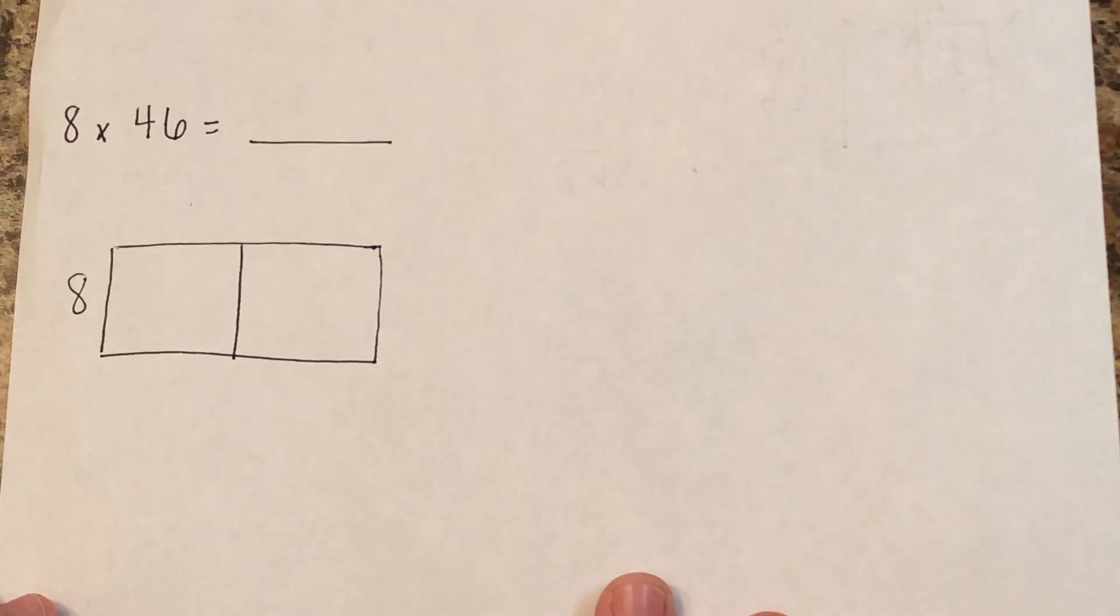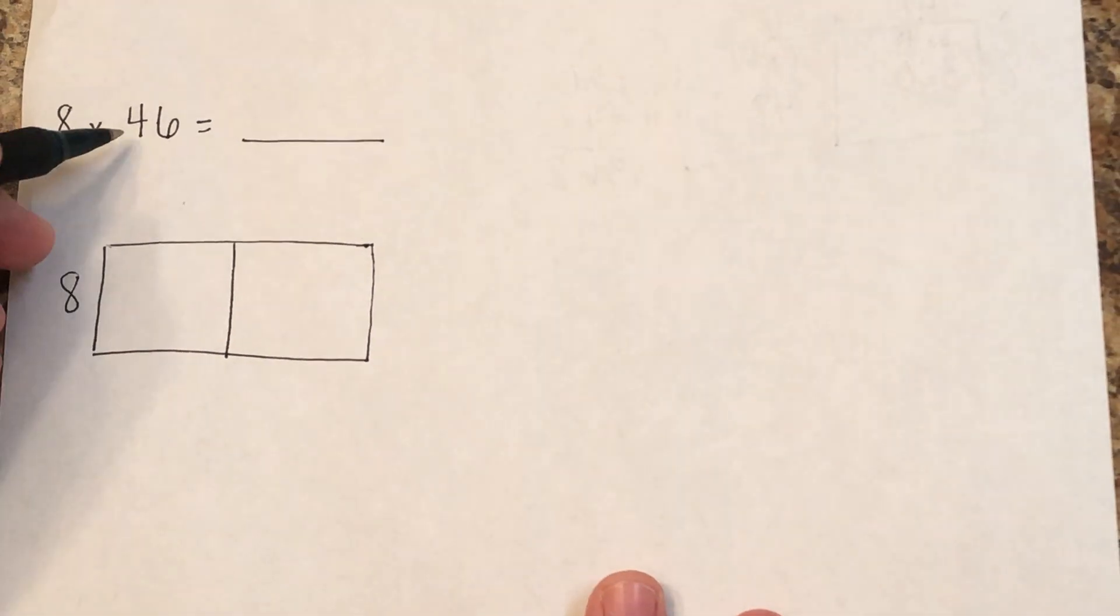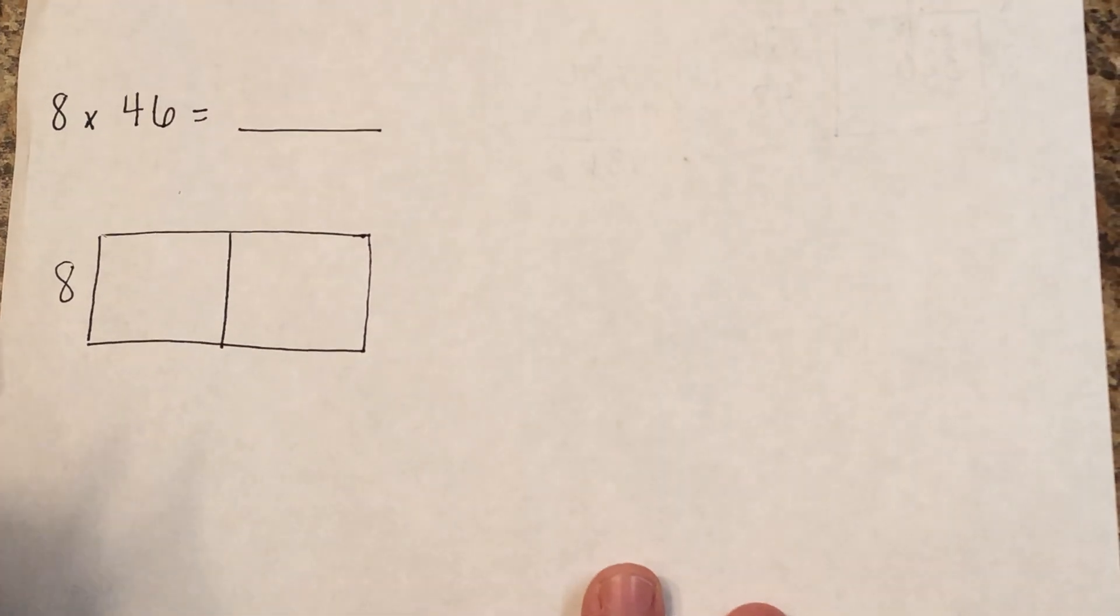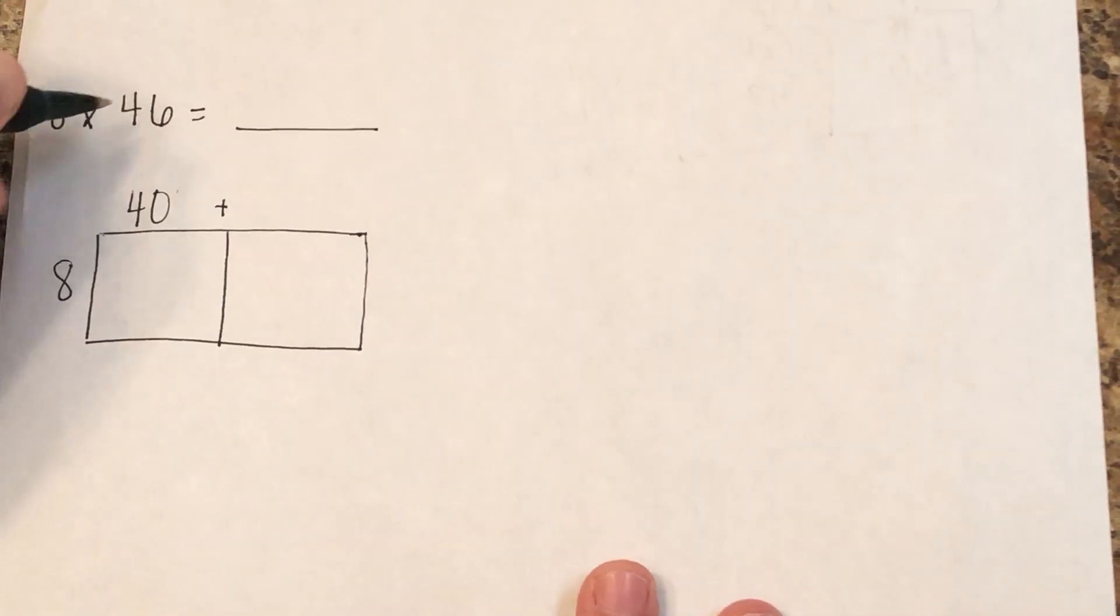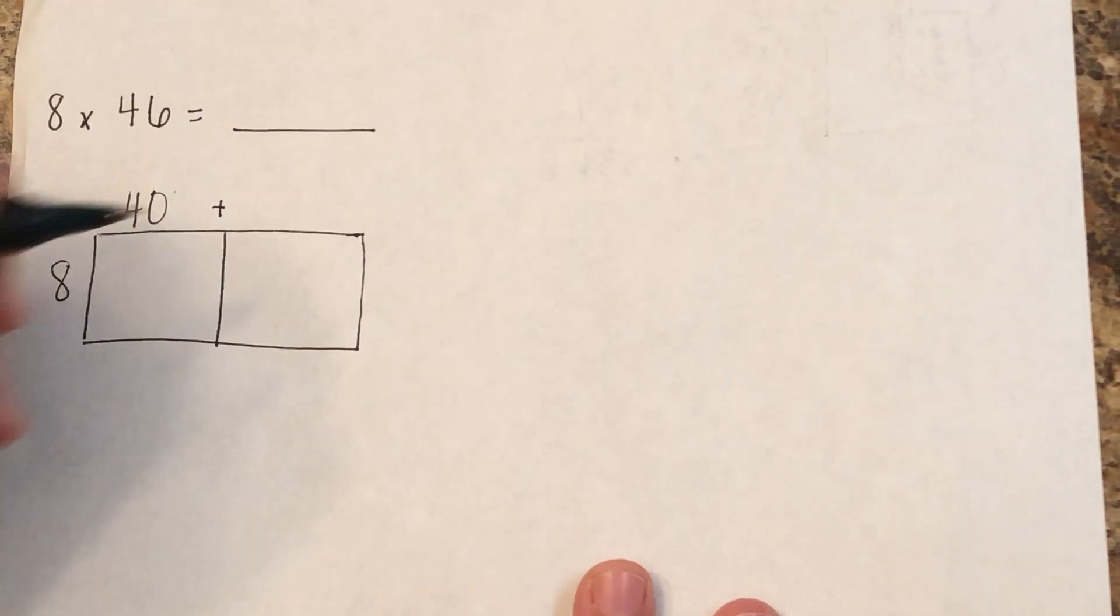So your 1-digit number is going to go right here, which is just 8. You're going to use the expanded form of 46. So that 4 is in the 10s place, so its value is 40. Plus the 6 that's in the 1s place, its value is 6.